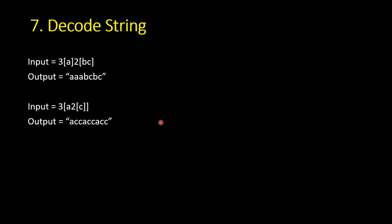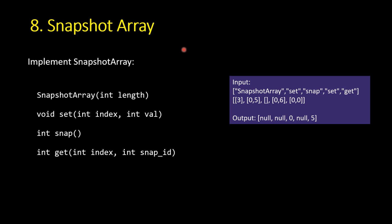The next problem is the snapshot array — a class you have to implement. Google emphasizes implementing classes. The constructor takes a length and initializes an array. The set function takes an index and value and sets the element. The snap function takes a snapshot of the array and returns the snap ID, starting from 0 and incrementing by 1 each time. The get function returns the value at a given index for a specified snap ID.